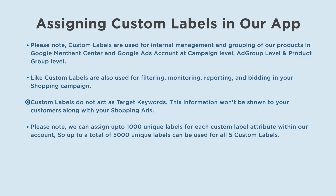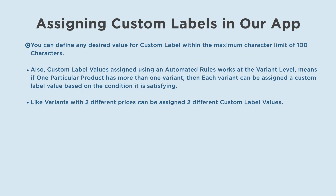Custom labels are also used for filtering, monitoring, reporting, and bidding in your shopping campaign. Custom labels do not act as target keywords — this information won't be shown to your customers along with your shopping ads. Please note we can assign up to 1000 unique labels for each custom label attribute within our account, so up to a total of 5000 unique labels can be used for all five custom labels. You can define any desired value for a custom label within the maximum character limit of 100 characters.